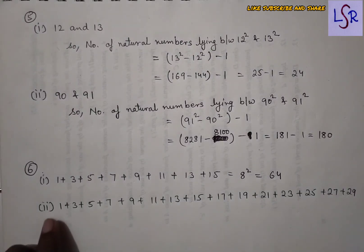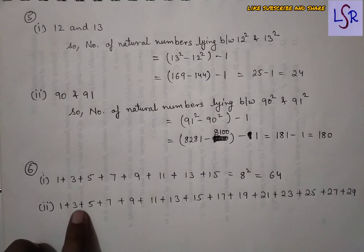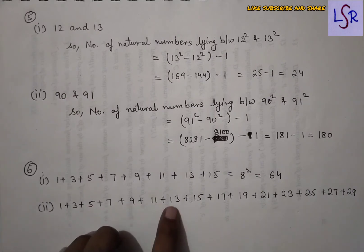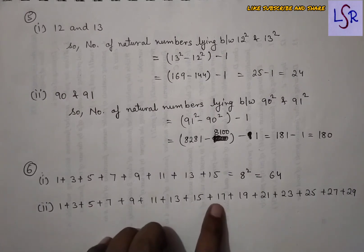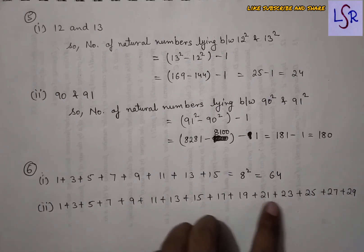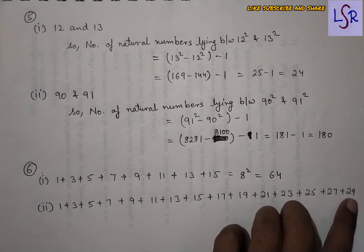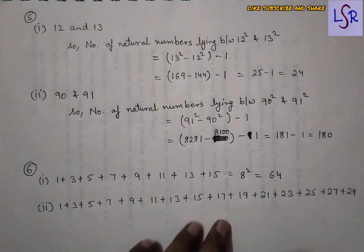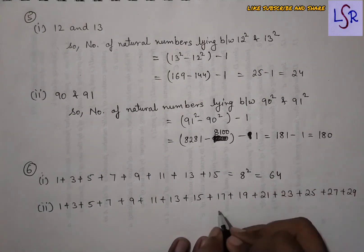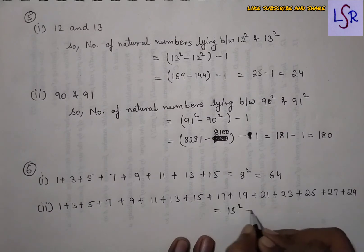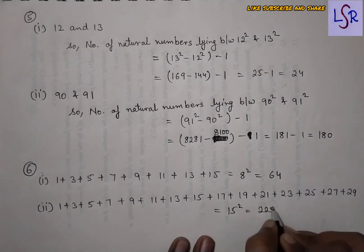For the second part of Question 6, the series goes up to 29. Counting the terms gives 15 terms, so the sum is 15²=225.